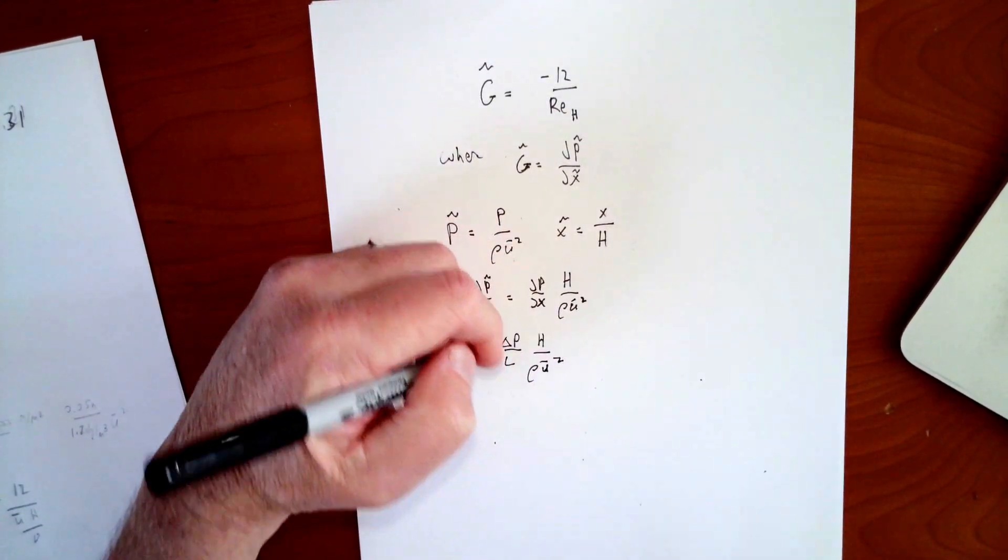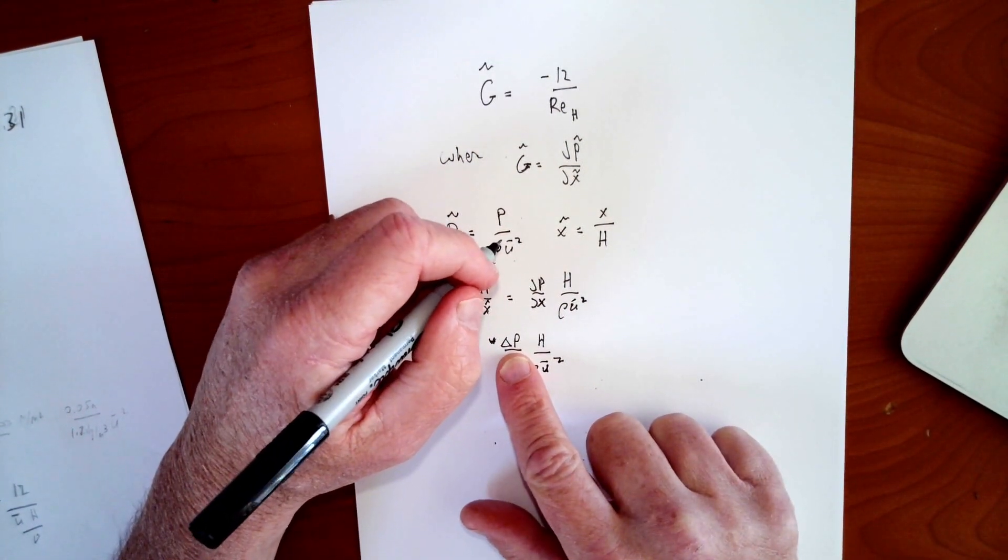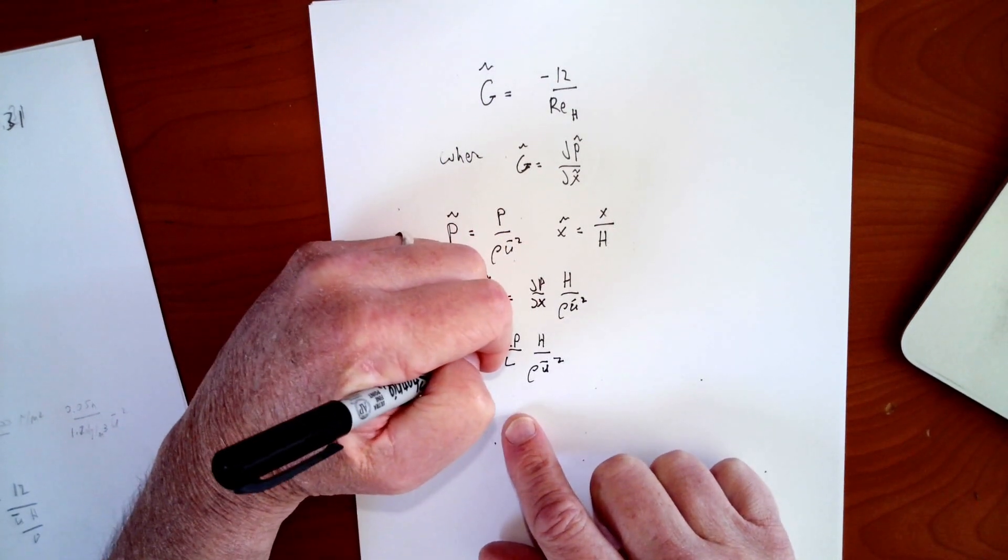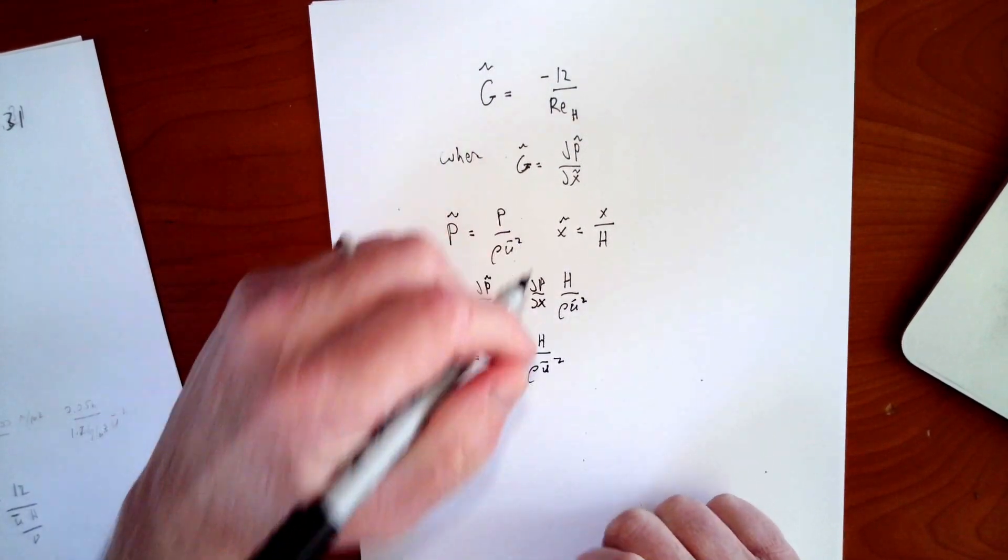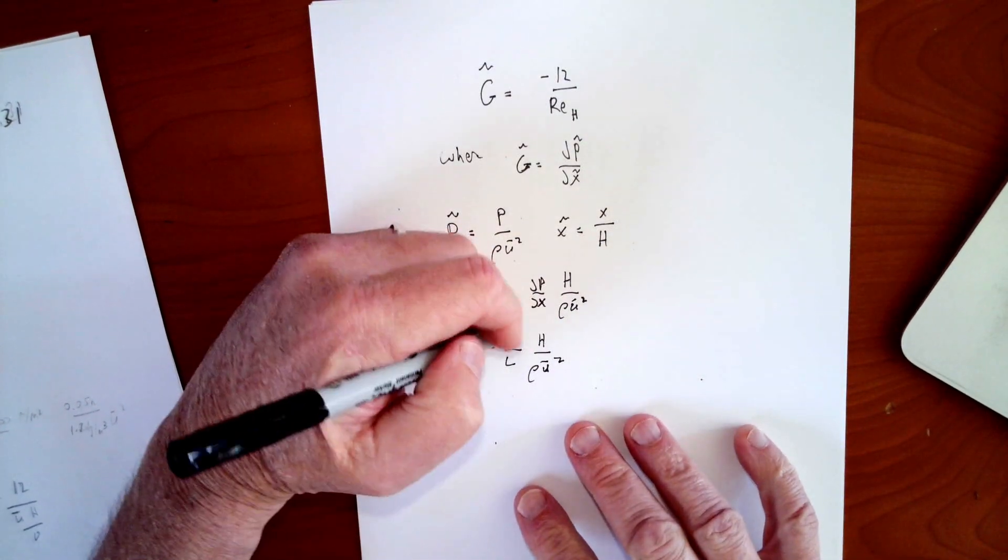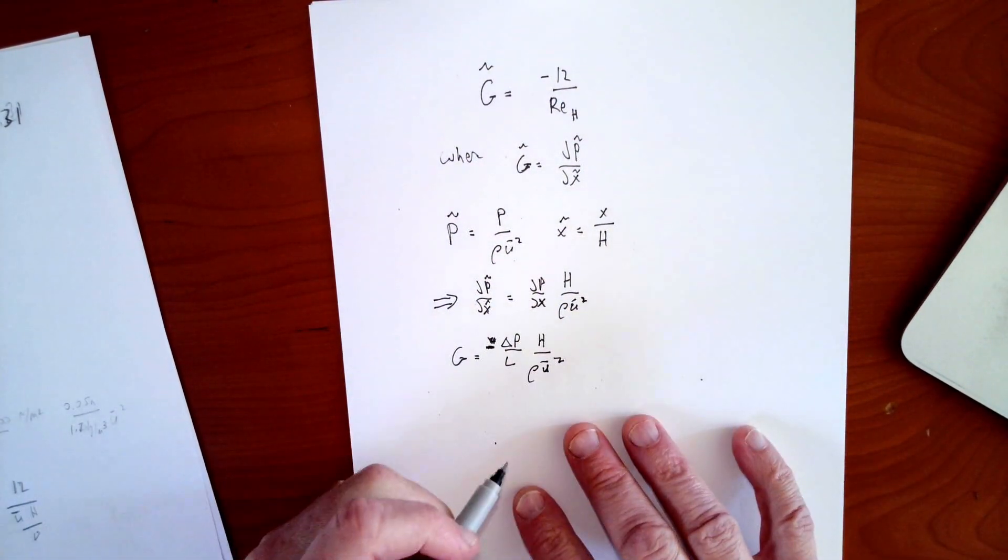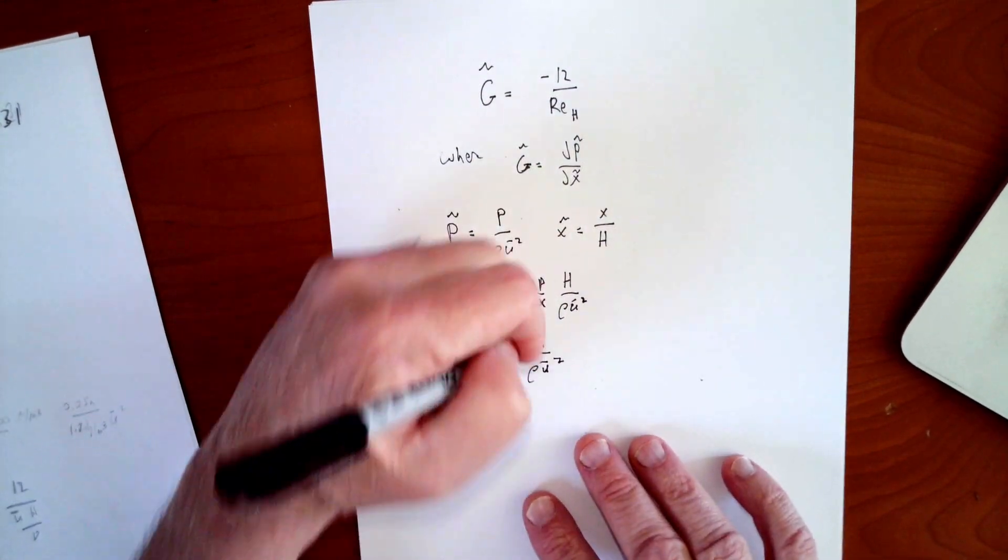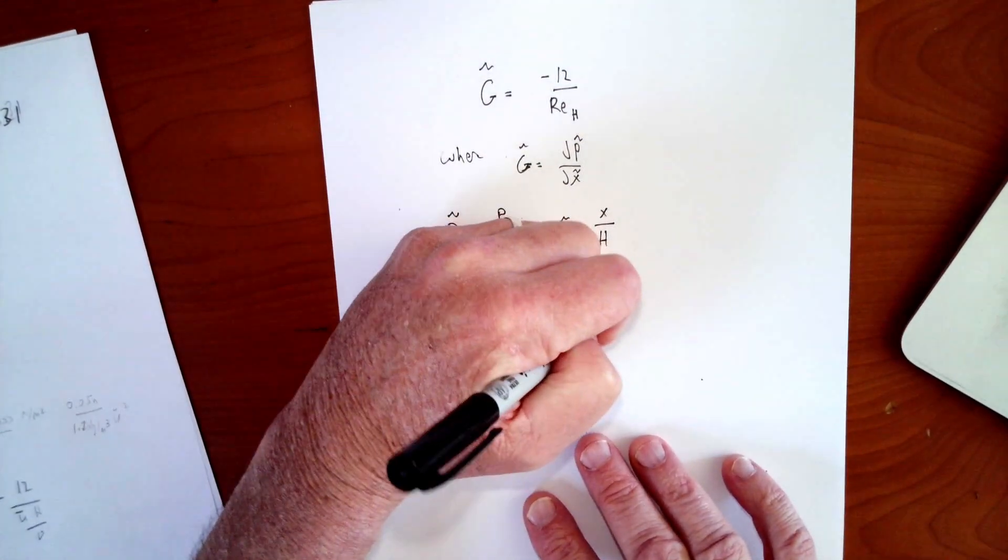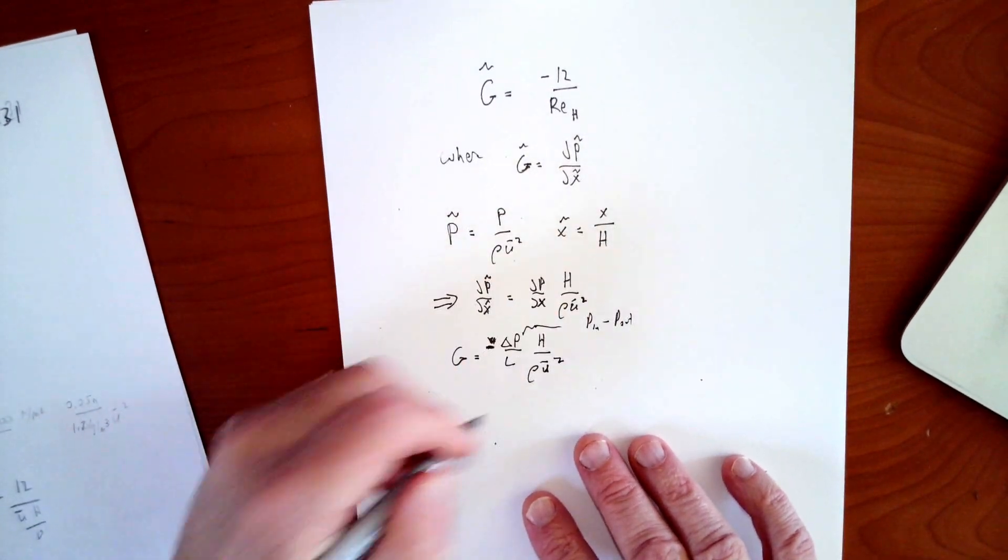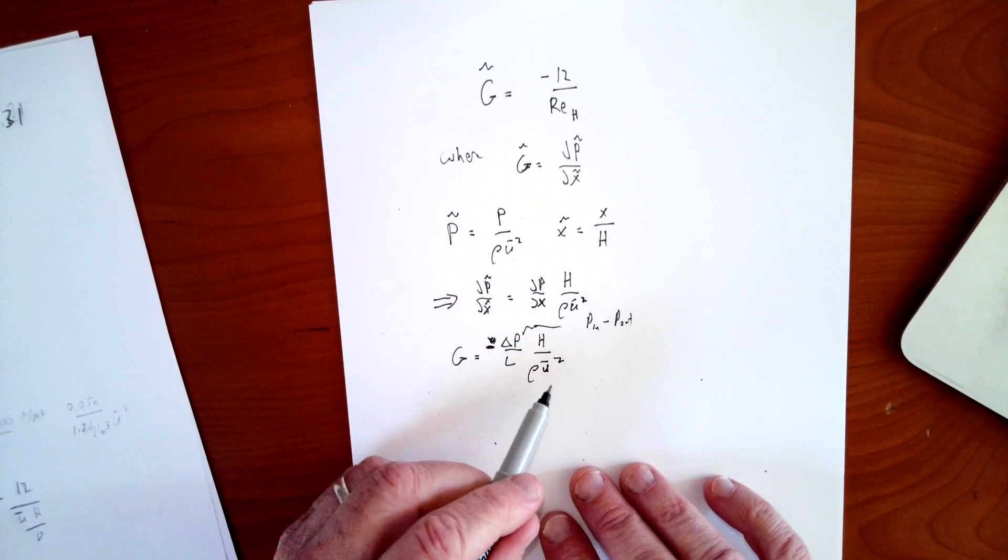So the p dx, now this has been defined as p in minus p out. So we need a negative sign here so that the pressure gradient will be negative if the pressure is decreasing as it goes from in the positive x direction. So we need a negative sign the way we have defined this, which is weirdly p in minus p out for these types of problems.